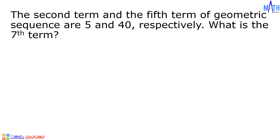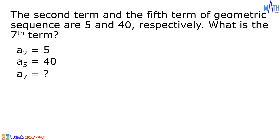First example: the second term and the fifth term of a geometric sequence are 5 and 40 respectively. What is the seventh term? Let us write the given. A sub 2 is equal to 5, A sub 5 is equal to 40, A sub 7 is unknown, and the common ratio is also unknown.